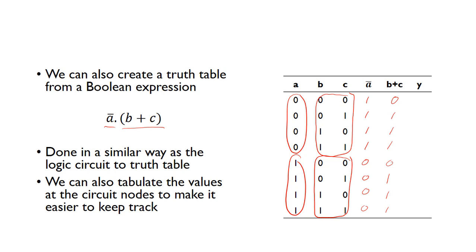And then finally Y is the AND of these two, so Y would be a 1 when both of these columns are a 1.